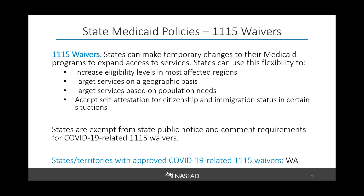Section 1115 waivers have become very relevant in recent years because states have used this authority to implement policies like work requirements and premiums, but they can also be used to expand access to substance use-related care. States can use 1115 waivers to make temporary changes to their Medicaid programs during an emergency. To date, only Washington has received approval for a COVID-19-related 1115 waiver. Washington's approved waiver applies primarily to people receiving long-term services and supports; CMS rejected the state's proposal to increase Medicaid eligibility to 200% of the federal poverty level.